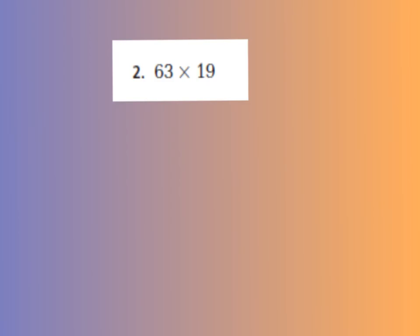All right, let's look at number 2. As you can see, we have a 2-digit number times a 2-digit number. So we're going to estimate what the product would be for this 2-digit by 2-digit multiplication problem. So when we estimate for multiplication, we round.